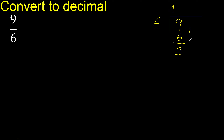There are no more digits to bring down, so we add a decimal point. Complete with a zero, and place the decimal point — the decimal point is placed only once.